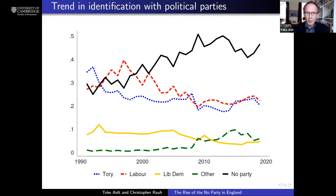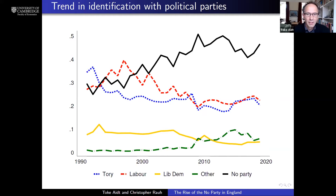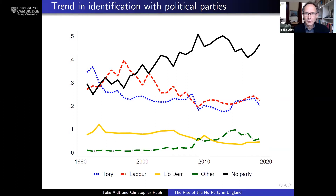I want you to focus on the black line in this diagram. In 1990, about a quarter — 25 percent — of respondents said they did not identify with any political party. By 2010, that had increased to about half — 50 percent. So over this period we have seen a doubling, from about a quarter of the English population not identifying with any political party to about half. This is what we refer to as the rise of the no party.